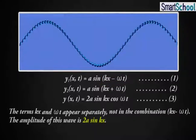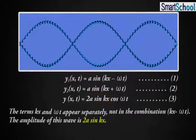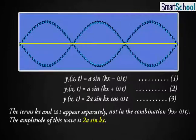The amplitude of this wave is 2a sin(kx). Thus, in this wave pattern, the amplitude is not constant but varies from point to point as a function of x.